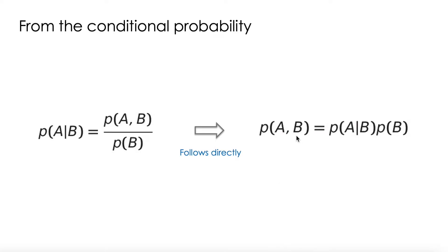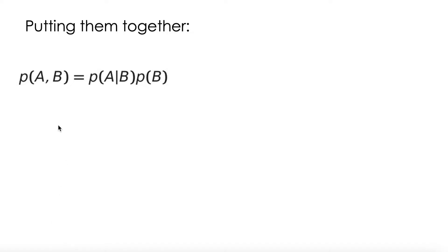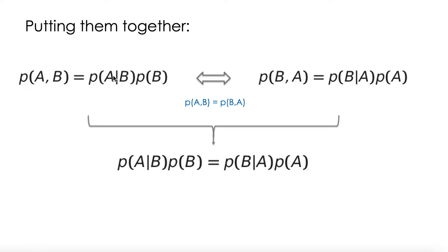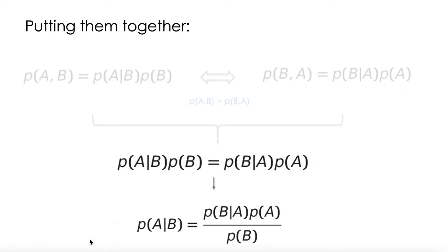The probability of two events can be written as the probability of one given the other times the probability of the other. In addition, we know that the probability of A and B is the same as the probability of B and A — that's very simple. The probability of doing drugs and alcohol is the same as the probability of doing alcohol and drugs. So if we use this property, then we can write the formulation this way, knowing that both right-hand sides are equal.